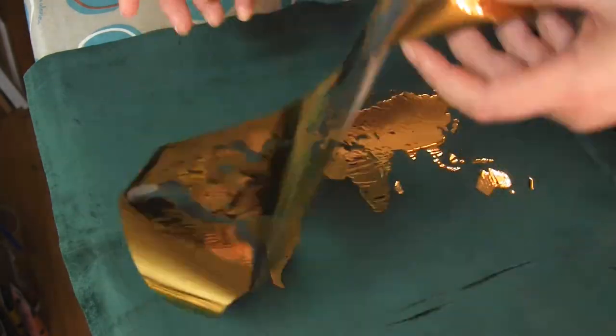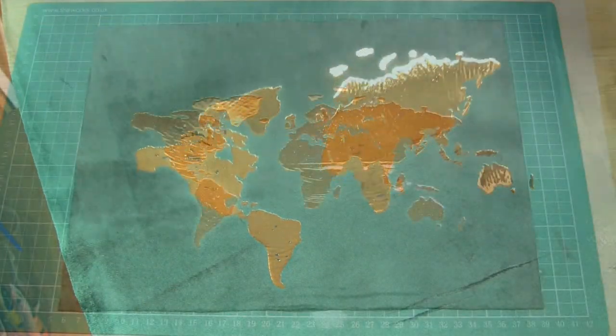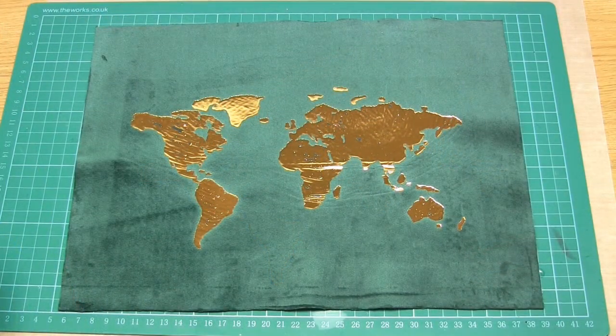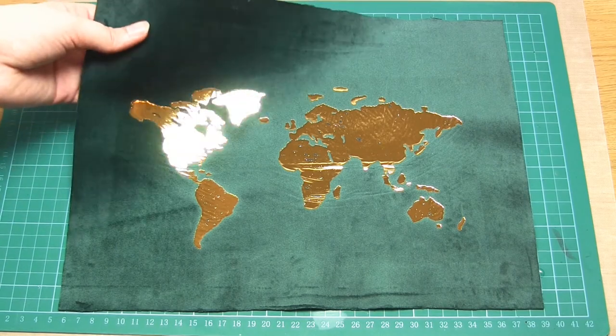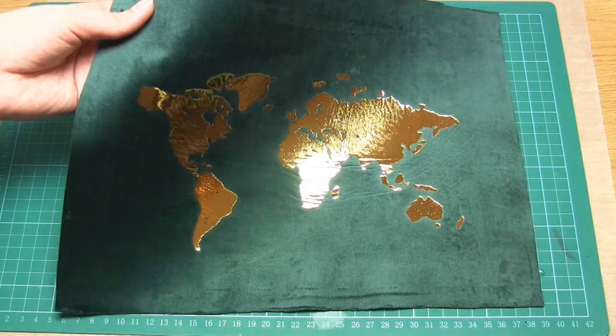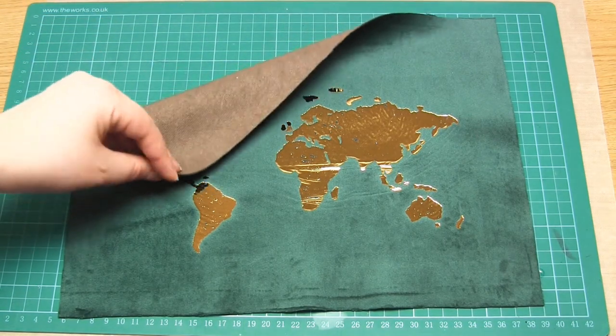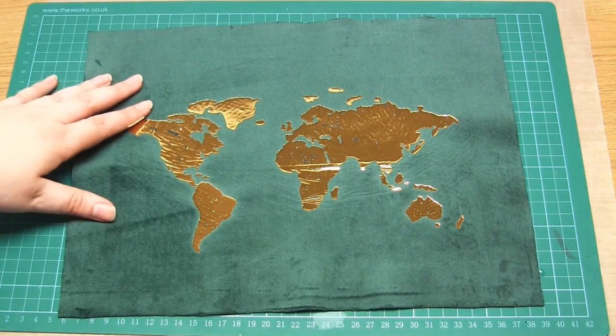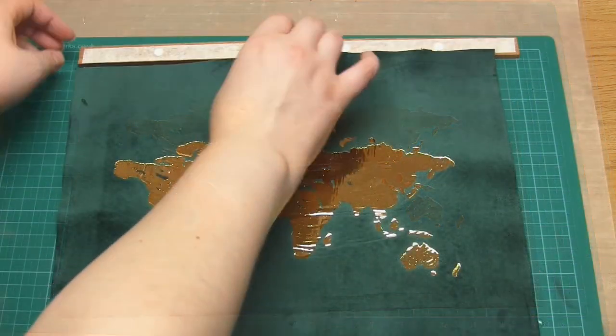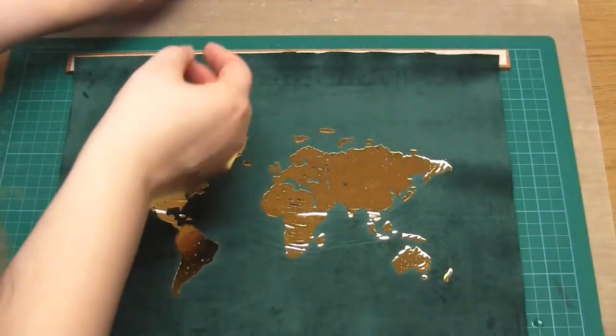And then the final step is just to cut the fabric to shape, which in my case was a rectangle around 32 by 25 centimeters. If you wanted, you could instead choose to make the fabric into a pennant shape or other kind of classic banner style. And if you're using fraying fabric, you'll probably want to hem the edges as well.